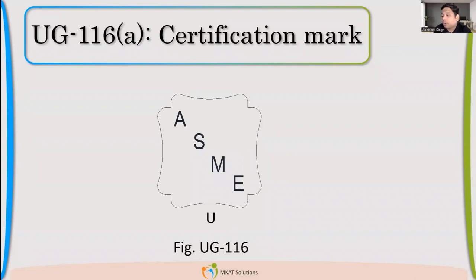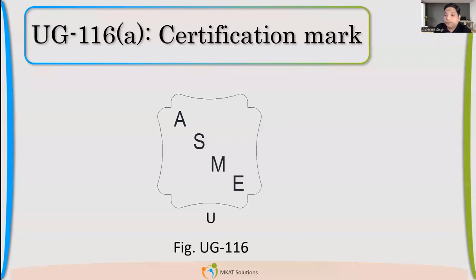The problem comes when I am a manufacturer and I want to have this certification mark. Unless I get a job which is a U-STAMP job, how will I be able to demonstrate the capability? We don't have jobs, so how do we show the capability? And unless we show the capability, ASME will not issue the certification mark.